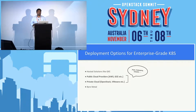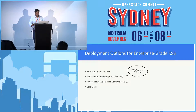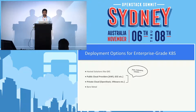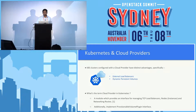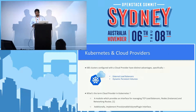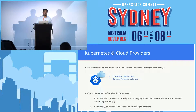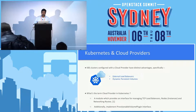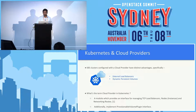Before we get to multi-clouds, it's important to understand why you would even deploy a Kubernetes cluster on a single cloud provider. Kubernetes clusters that are configured with cloud providers have some distinct advantages. Specifically, they can leverage the underlying IaaS capabilities to get load balancers and persistent storage volumes for your container workloads. To facilitate this, Kubernetes defines a cloud provider interface, which is completely implemented out-of-box for clouds like AWS and OpenStack.